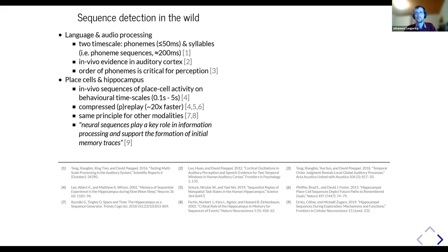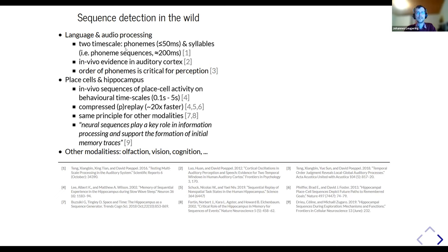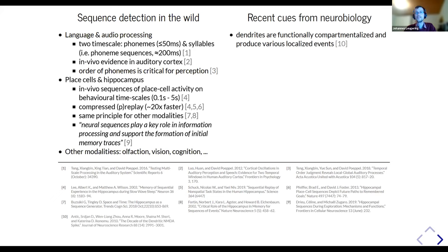There is converging evidence that the hippocampus may be involved in sequence processing across modalities as a general principle. As one summary puts it: 'neural sequences play a key role in information processing and support the formation of initial memory traces.' Similar results appear in olfaction, vision, and general cognitive tasks — it is a recurring theme found everywhere, prompting the question: what are the biological mechanisms underlying all of this?